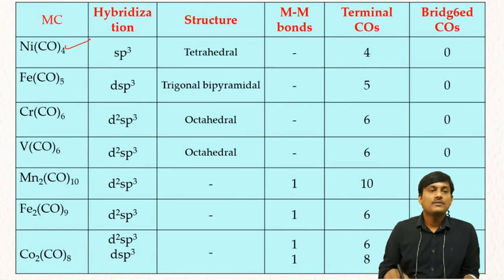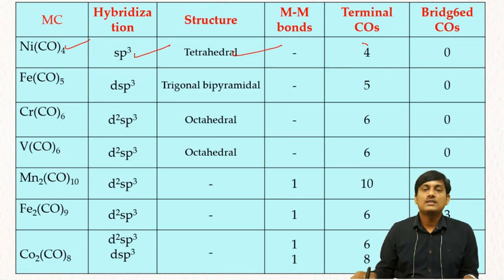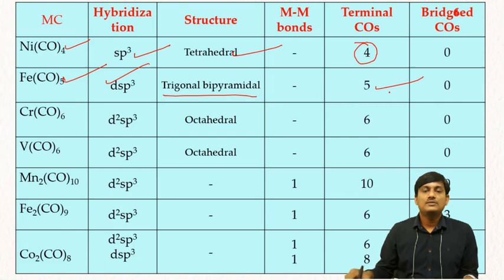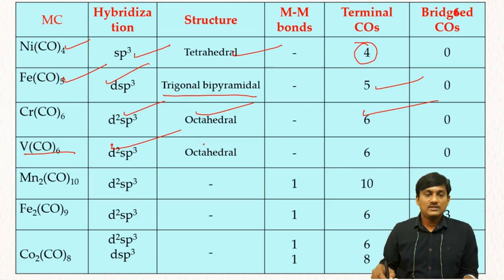Let us summarize the hybridization and structure of metal carbonyls. NiCO₄: sp³ hybridization, tetrahedral, no metal-metal bond, all terminal COs, no bridged CO. FeCO₅: dsp³ hybridization, trigonal bipyramidal, no metal-metal bond, 5 terminal COs, no bridged CO. CrCO₆ and VCO₆: d²sp³ hybridization, octahedral, 6 terminal CO ligands, no bridged CO, no metal-metal bond.